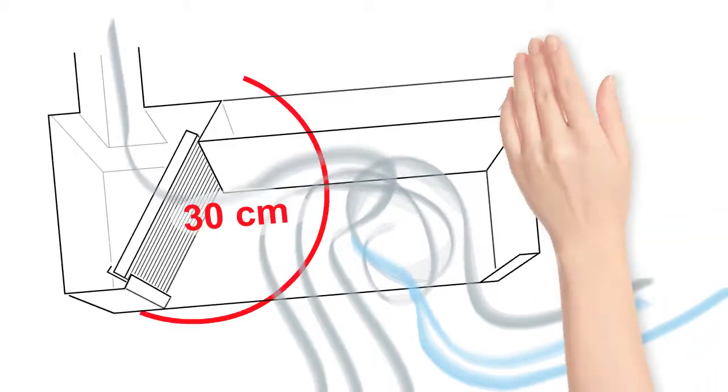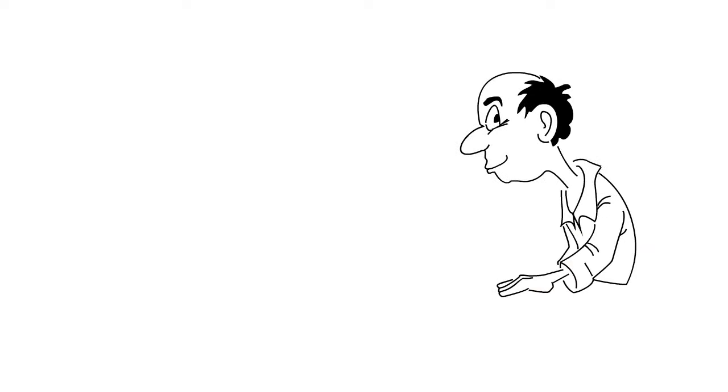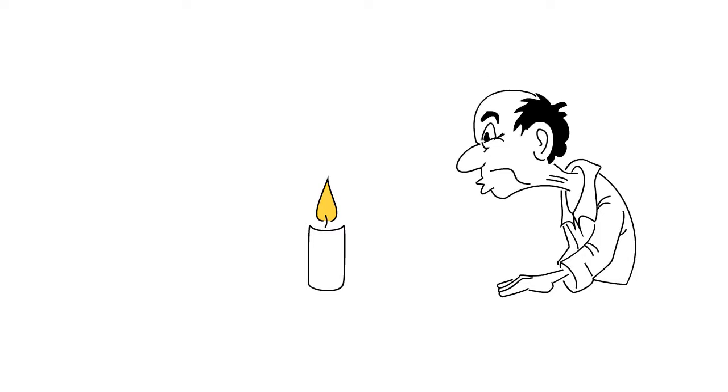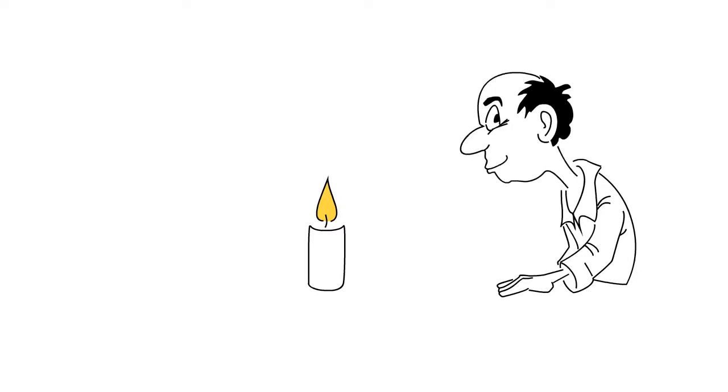Why is it so difficult to suck something in? Professor Smart explains it by taking the example of a candle. He tries to extinguish the flame by sucking air in. His efforts fail because the candle is too far away.